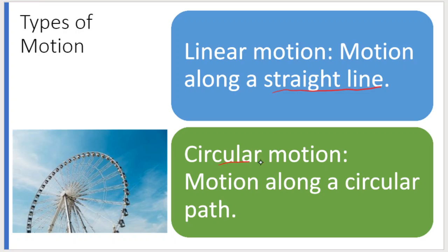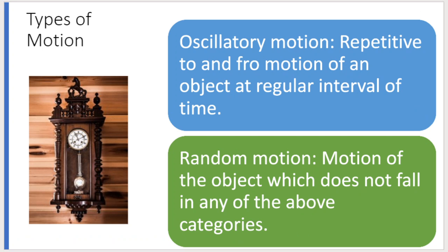What is circular motion? Circular motion is motion along a circular path. These are all examples of circular motion. Then, oscillatory motion — the repetitive to-and-fro motion of an object. A pendulum is the example for oscillatory motion.